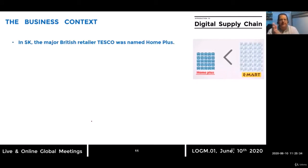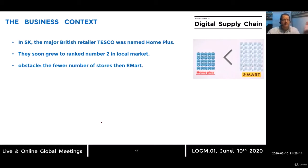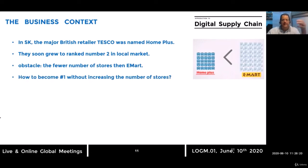Tesco is a major British retailer. When they entered South Korea, the brand was renamed Home Plus. Neymart is the biggest competitor, and Home Plus is the challenger. Home Plus quickly grew to number two in the local market but faced an obstacle: a fewer number of stores than Neymart. The question to be answered was how to become number one without increasing the number of stores, due to physical limitations on opening new locations.